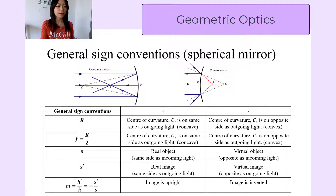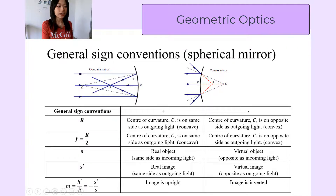Here's a diagram. On the left we have a concave mirror, so the reflected surface is on the inner side of the sphere. C indicates the center of the sphere. The outgoing light is on the left of the mirror, which is on the same side as the center. So for a concave mirror, r, the radius of curvature, is positive.